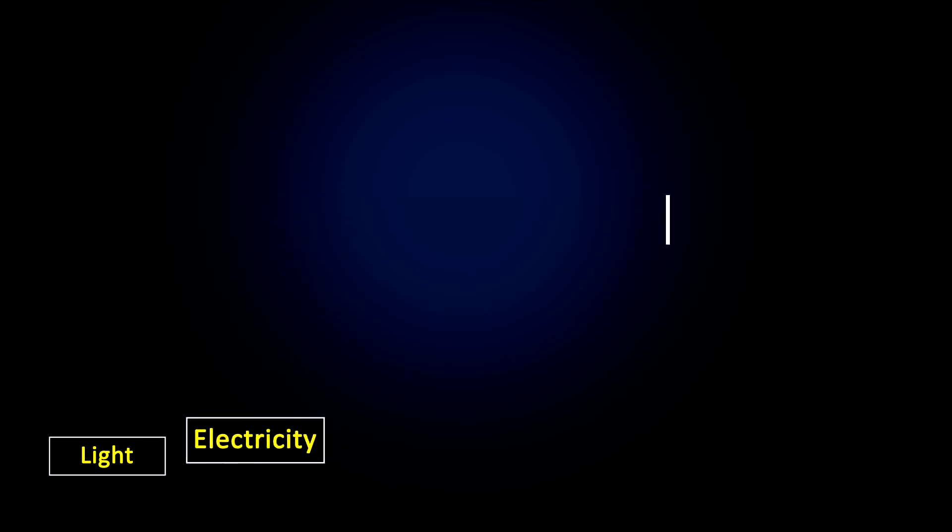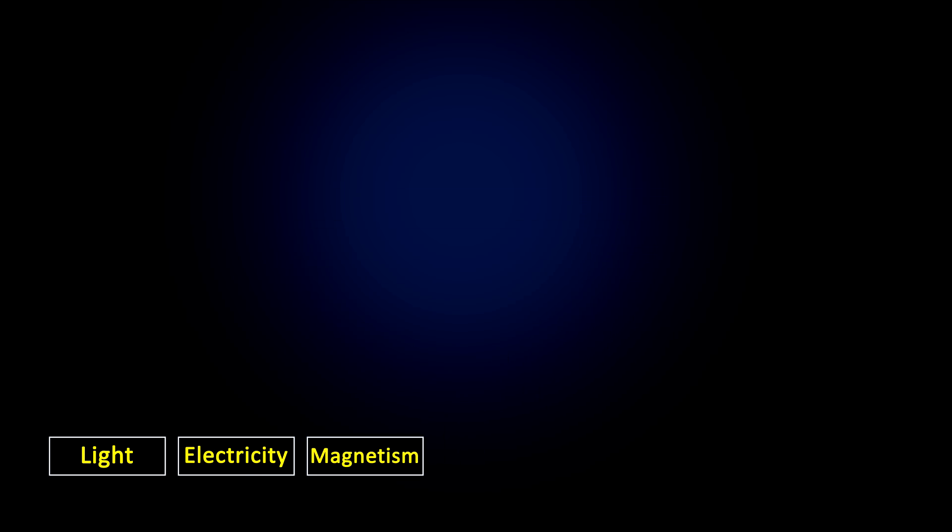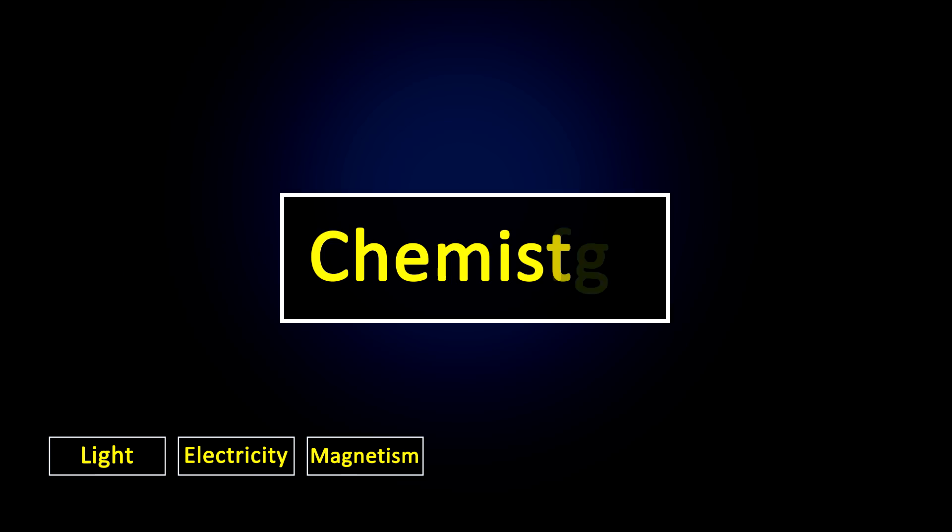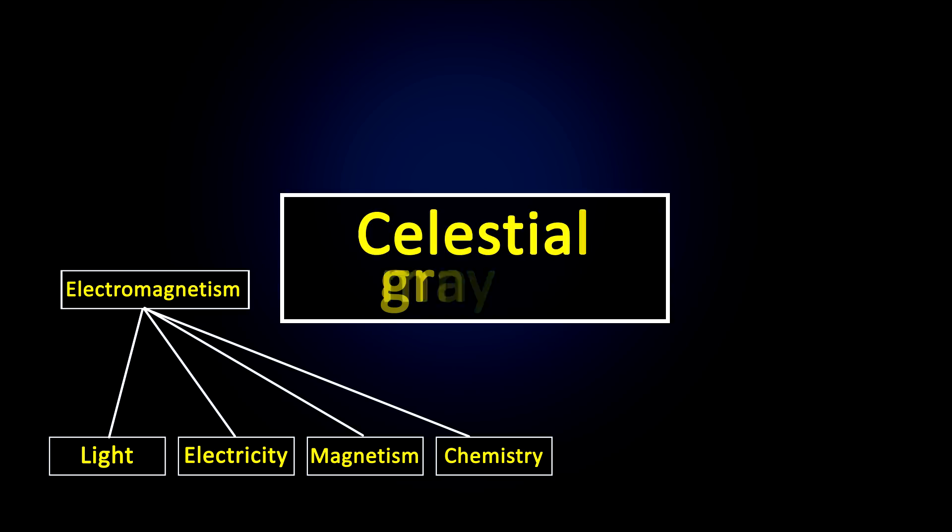So light, electricity, and magnetism, which had appeared to be three completely different phenomena, or forces, were now united. Later, chemistry was also determined to be an electromagnetic phenomenon. We now know that electricity, magnetism, light, and chemistry are really manifestations of a single force. But this was not obvious in the past.